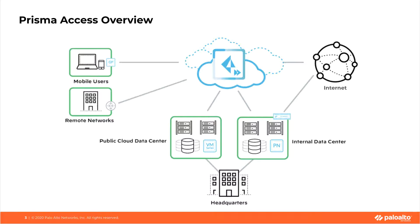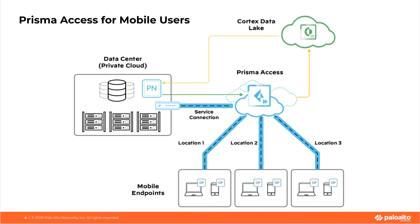Prisma Access for mobile users provides security services that Palo Alto Networks is known for — for example, App ID, User ID, Threat Prevention, DNS Security, and Enterprise DLP. All of these services are available with Prisma Access.